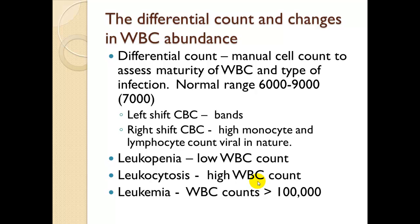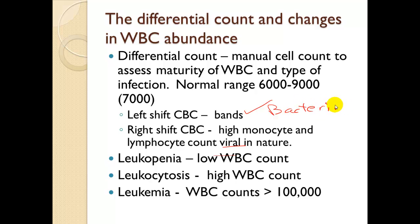A differential count is a manual cell count used to assess the maturity of white blood cells and the type of infection. Normal white blood cell ranges are 6,000 to 9,000, with an average of about 7,000. A left shift CBC means they see a lot of bands — immature white blood cells — indicating the body is fighting something that has overwhelmed it. A right shift CBC shows high monocyte and lymphocyte counts and is generally viral in nature. Just by looking at a manual cell count, they can tell if it's a virus or a severe bacterial infection.